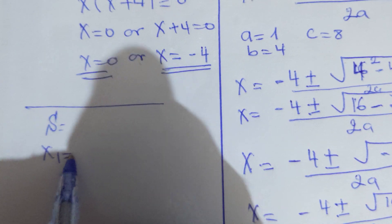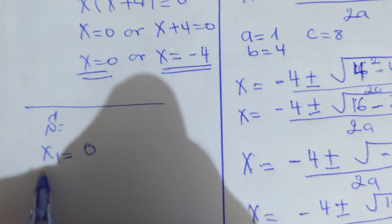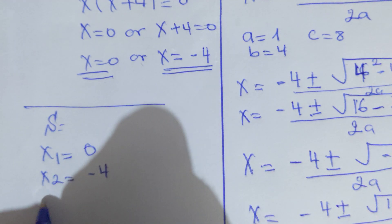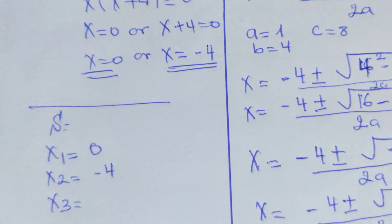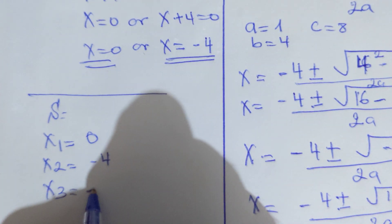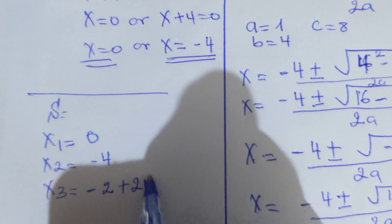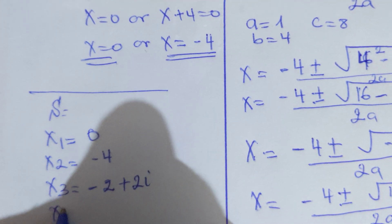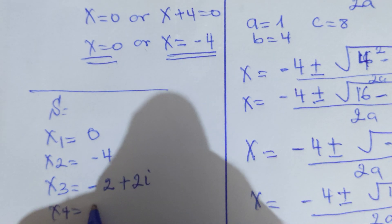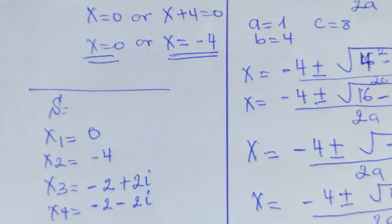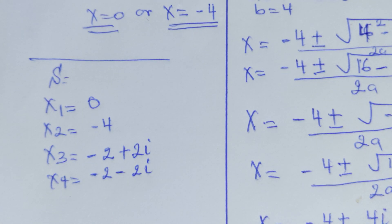To sum up our answers: x₁ = 0, x₂ = negative 4, x₃ = negative 2 + 2i, and x₄ = negative 2 minus 2i. Thanks for watching — don't forget to subscribe and share. See you next time.